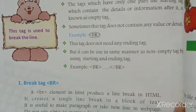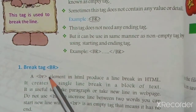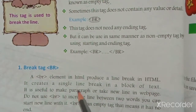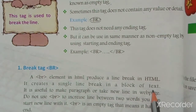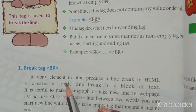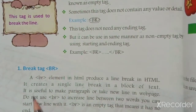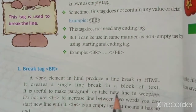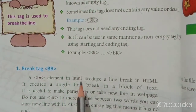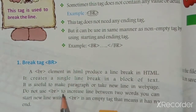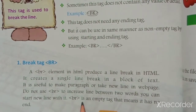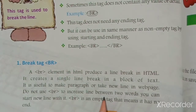The break tag: a BR element creates a line break in HTML. It creates a single new line in a block of text. It is useful to make a paragraph or take a new line in a web page. Do not use BR to increase the space between two words. BR is an empty tag, meaning it has no end tag.